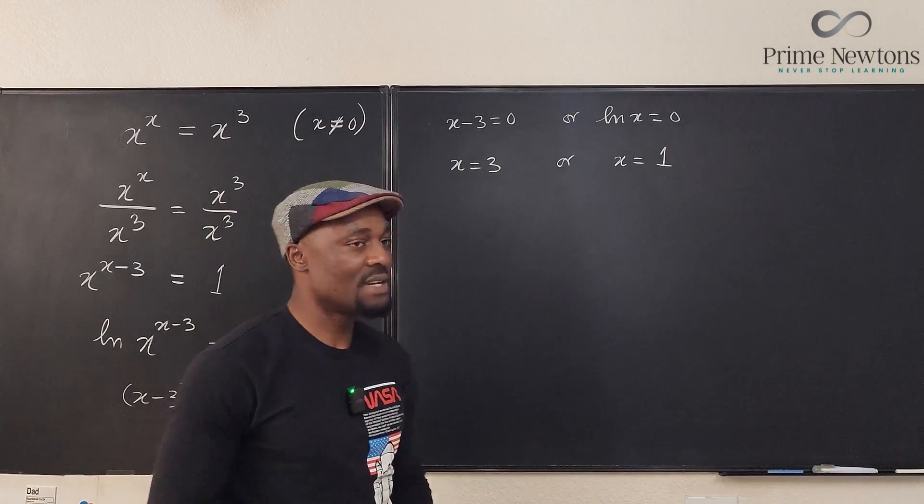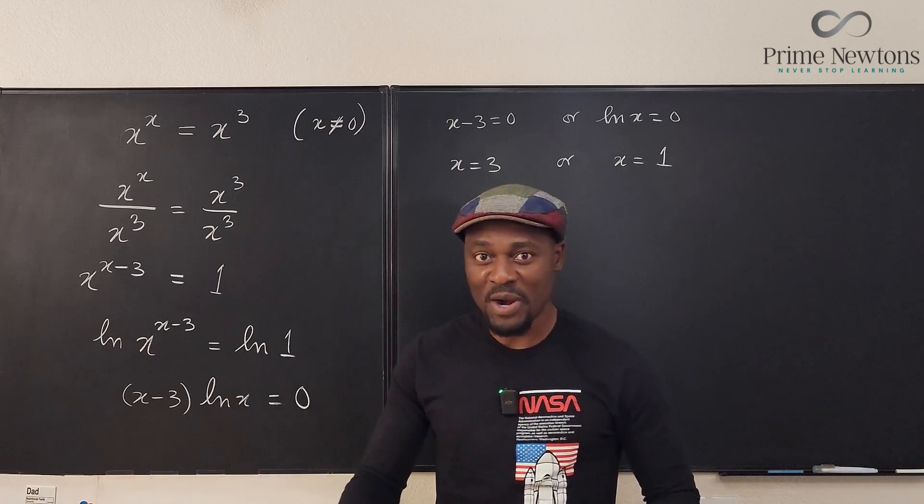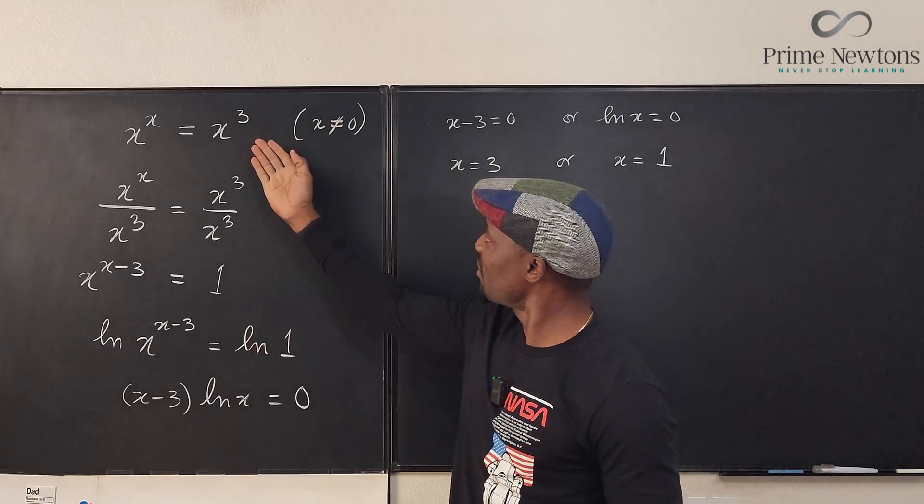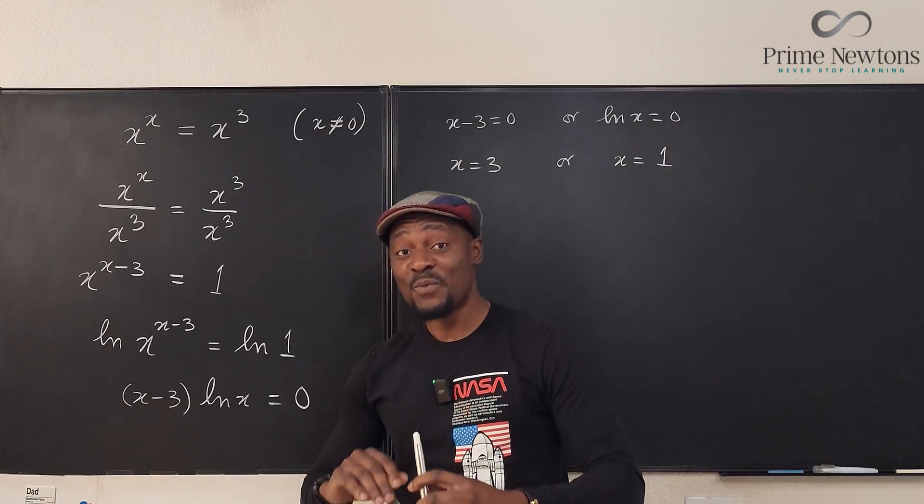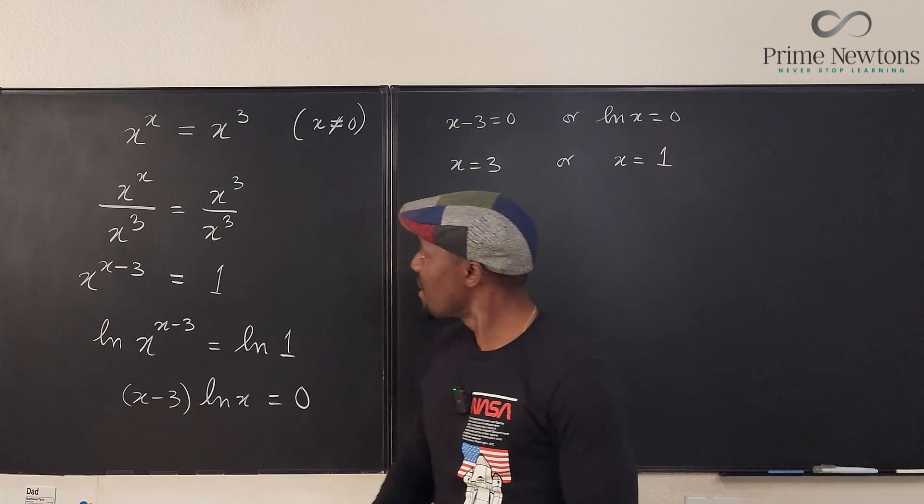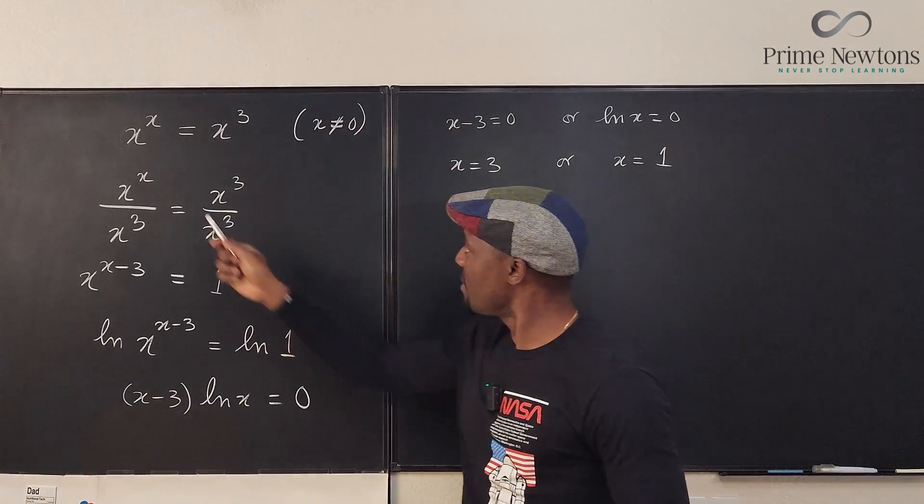And it doesn't look like there's any other option for us. So we have two answers and remember what I said at the beginning: we're supposed to get three answers. So I still don't know where to get the third answer from.